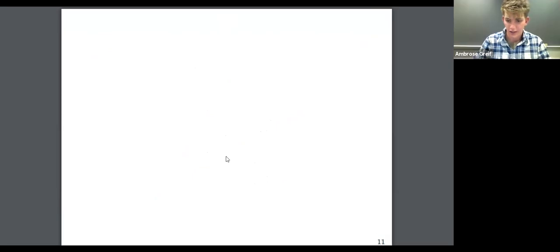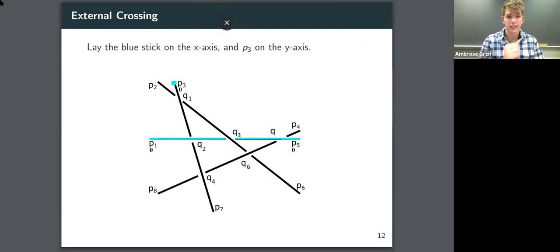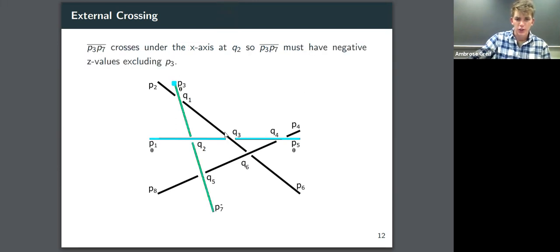All right. Thanks, Vitor. Let's see. Okay. So we're going to prove that the external crossing is a pseudo-stick knot projection in a similar manner. So here, remember that we're looking at this knot from above, if you will. So the z-axis is coming out towards you from the screen. And we're going to lay the blue stick on the x-axis and P3, this point right here, on the y-axis. So all the z-values of this blue line and this blue point are zero. Now notice that this greenish line right here, P3, P7, crosses under the x-axis at Q2. So we know that it must have negative z-values along this whole line, except for, of course, P3, which has a z-value of zero. Okay.